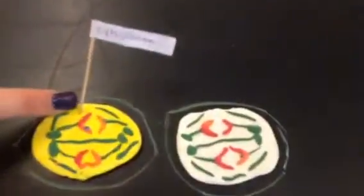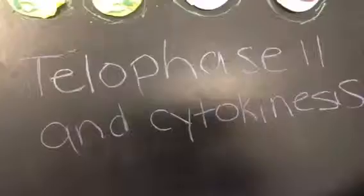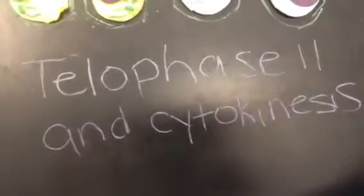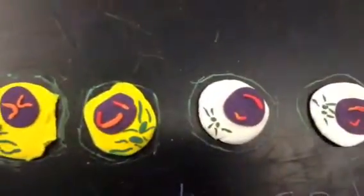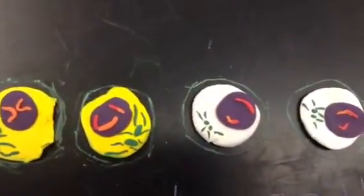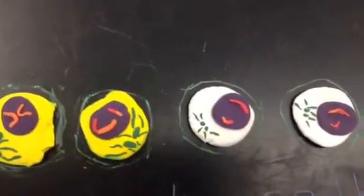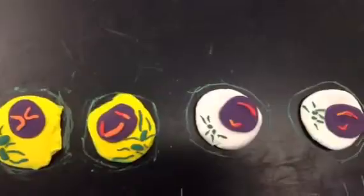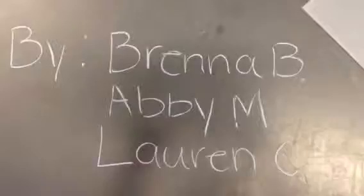And this is the cytoplasm. In telophase two and cytokinesis, each of the four daughter cells produced in meiosis two receives two chromosomes, which results in four haploid daughter cells.